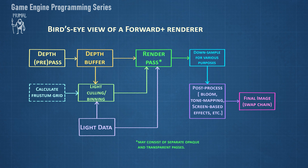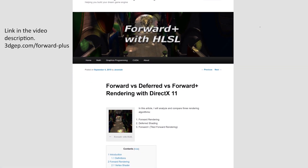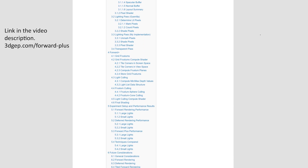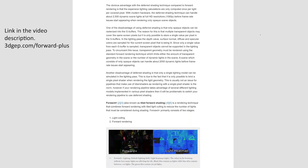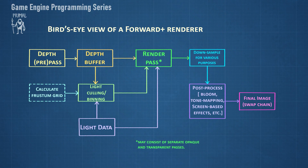The one less common method is ray tracing, but its usage is increasing with the new ray tracing hardware. For now I'm focusing on the forward plus technique. If you'd like to know more about other rasterizer techniques, I would recommend this excellent writing which discusses all three of them.